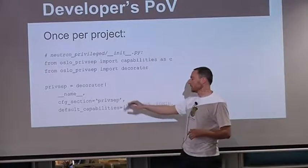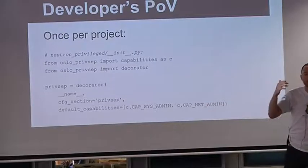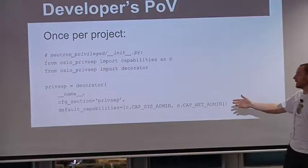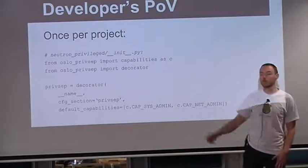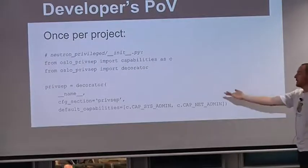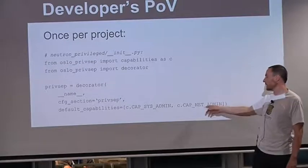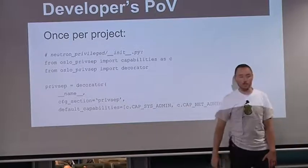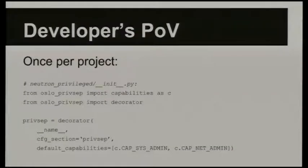The default capabilities — if the deployer doesn't override this — are what the privileged daemon will run with. In the Neutron case, about 80-90% of Neutron can get by with just CAP_NET_ADMIN. Unfortunately, we also need CAP_SYS_ADMIN just to enter a network namespace, which is a bit unfortunate but that's the way the latest kernel works. It's possible to have more than one decorator in your program, allowing multiple privileged separation daemons with different capability sets.